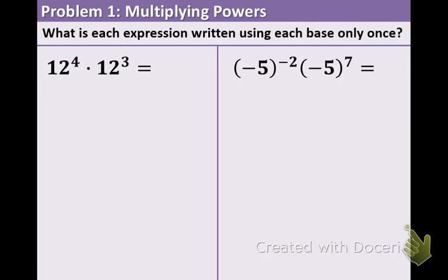First one, 12 to the 4th times 12 to the 3rd. That means we're going to take 12 to the 4 plus 3. So we're adding the exponents and we get 12 to the 7th. We do not need to figure out what these equal because it's just asking for us to write each expression with only one base instead of 2.